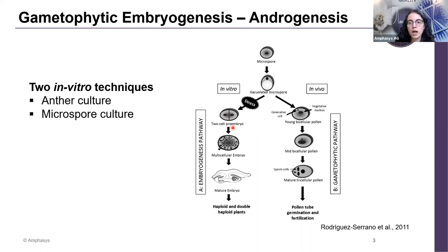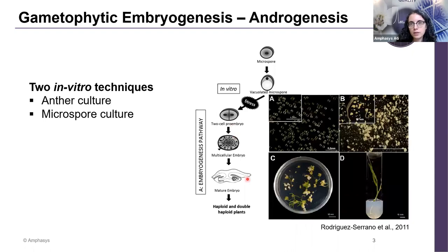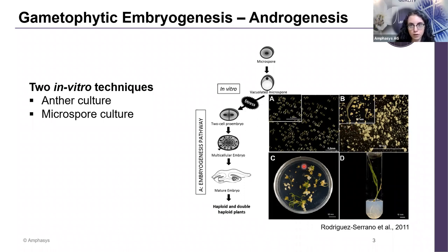From that, a multicellular structure will form, and eventually an embryo will develop. In practice, if you're starting from isolated microspores, you will have your microspore culture. They will divide and form multicellular structures, among which embryos. The embryos can be cultured, and from those, plantlets can be regenerated.